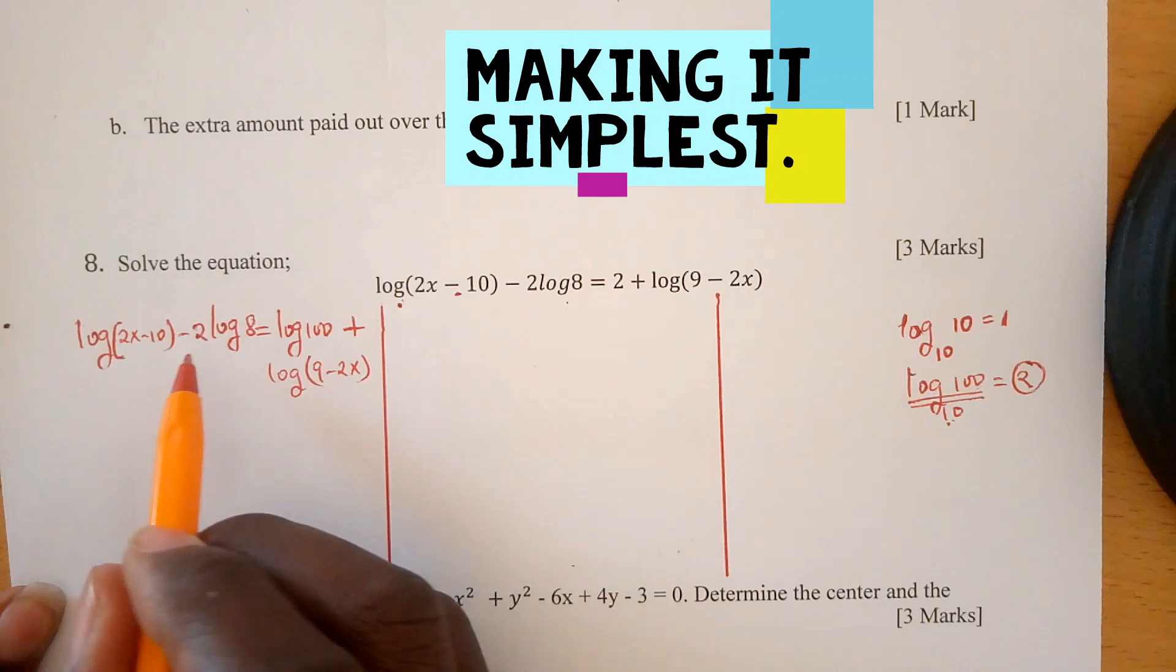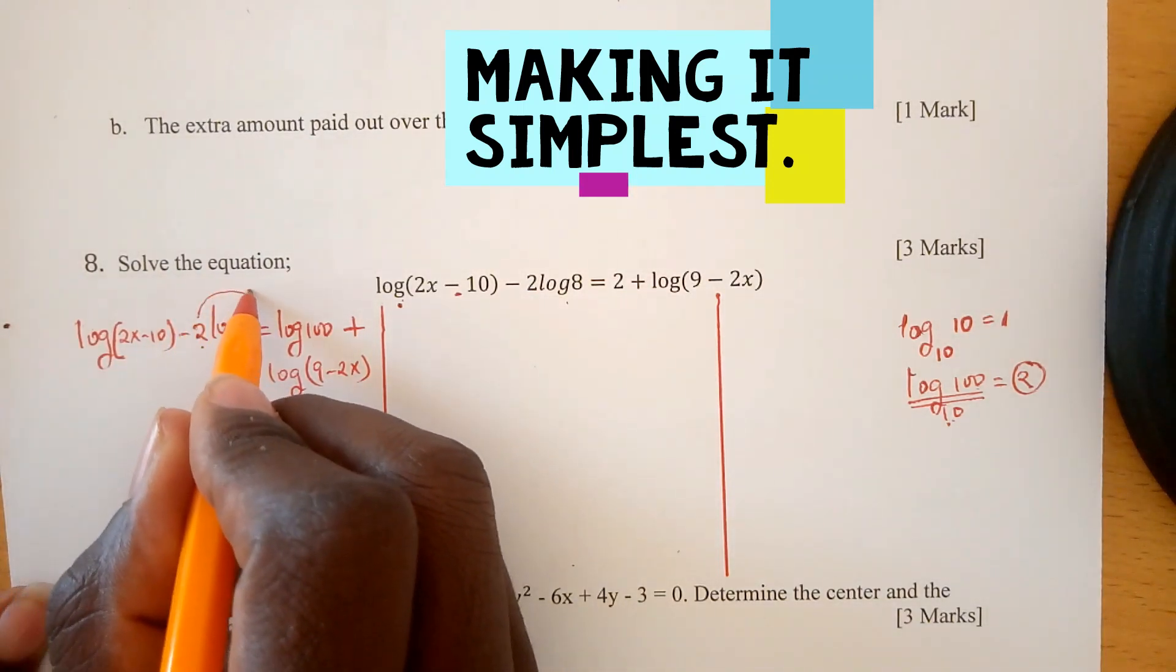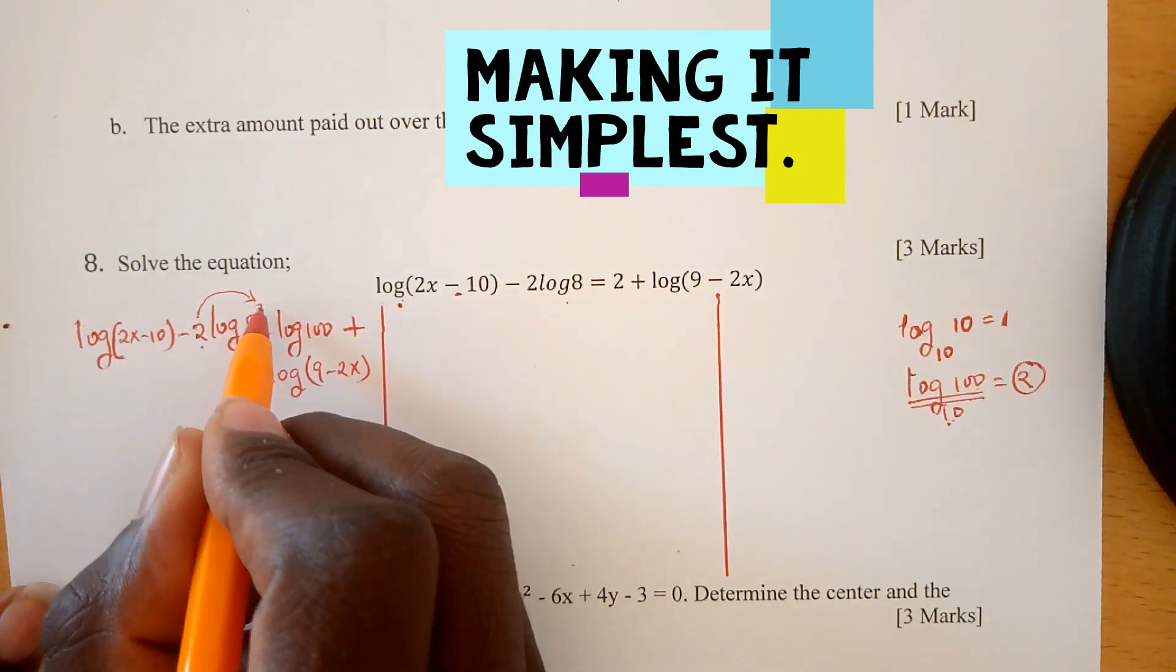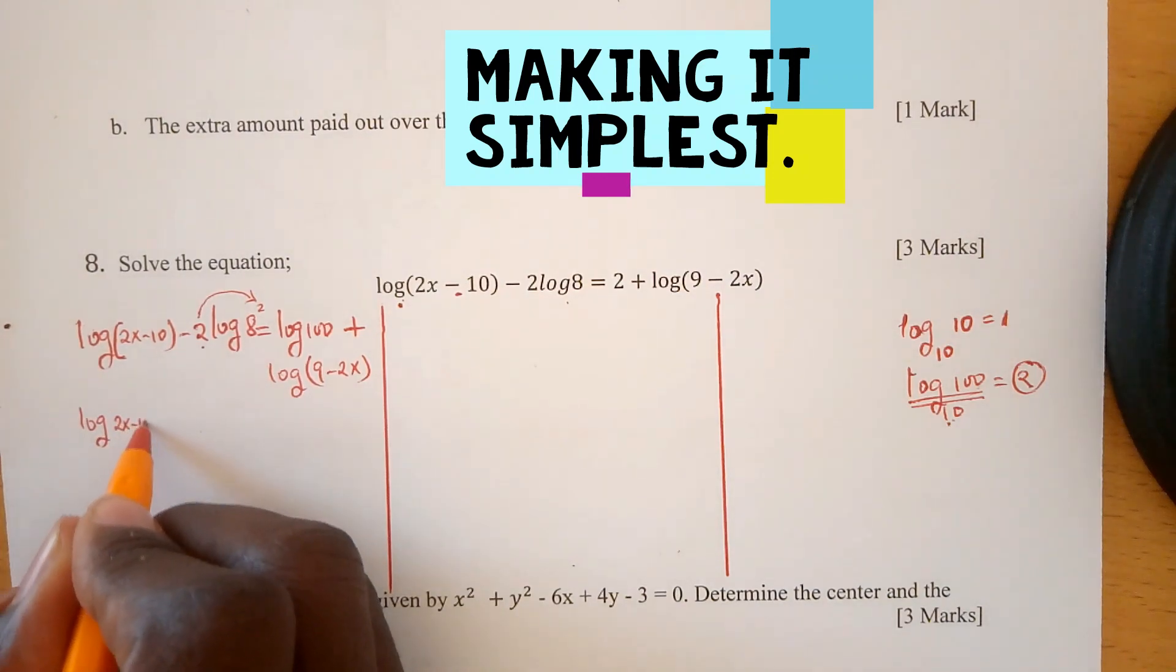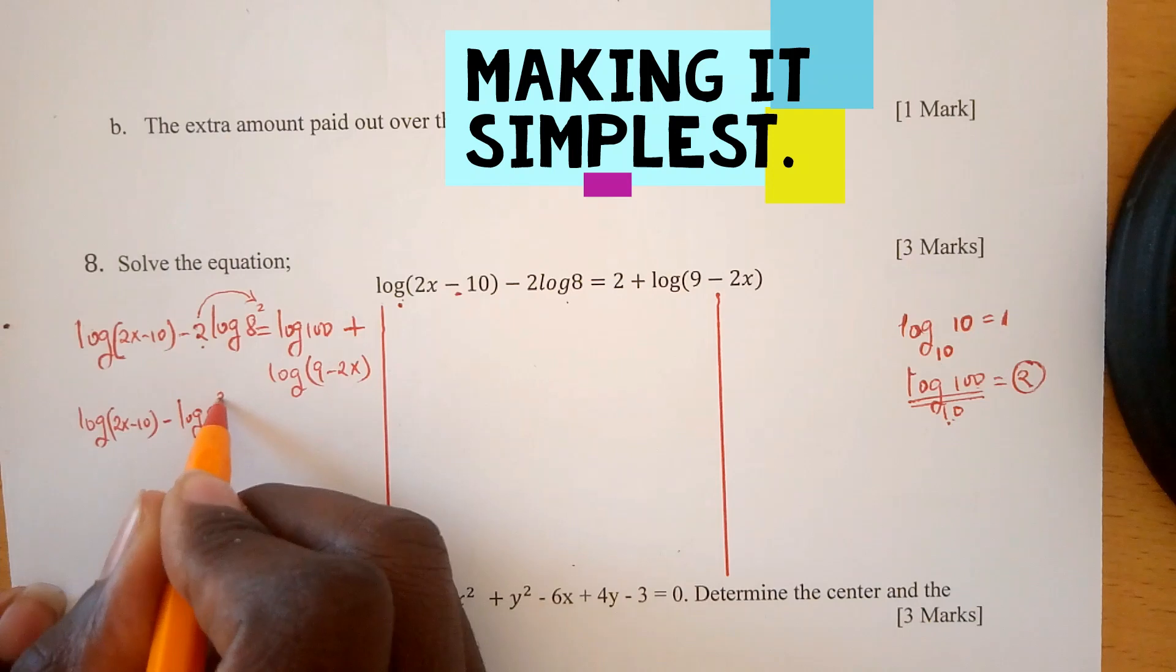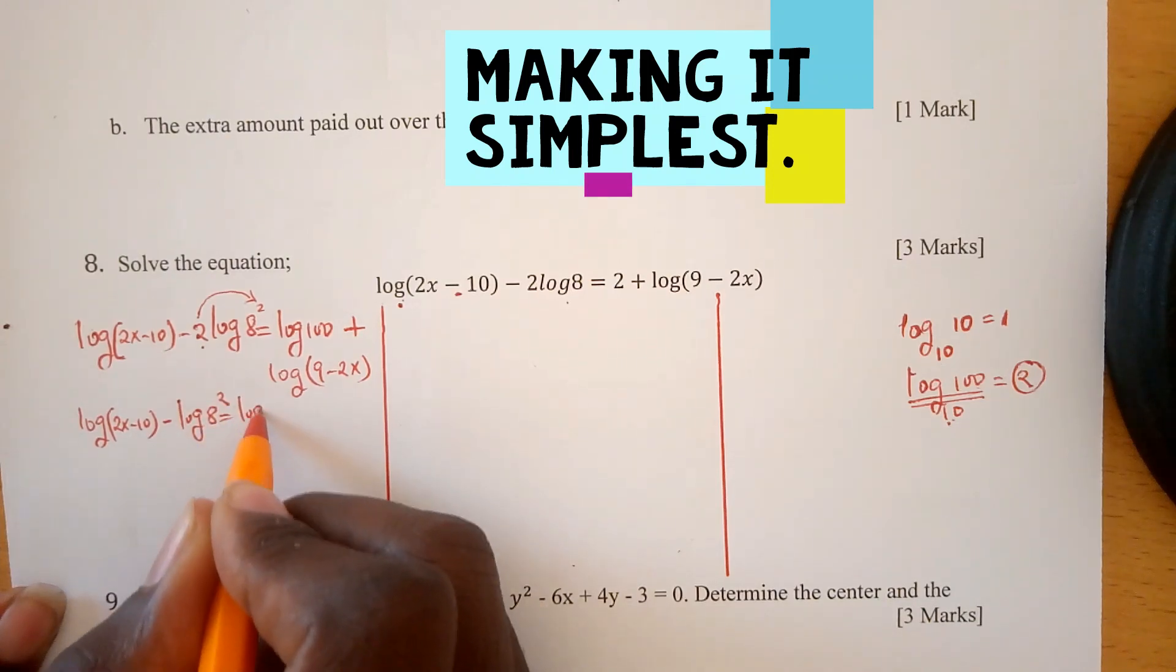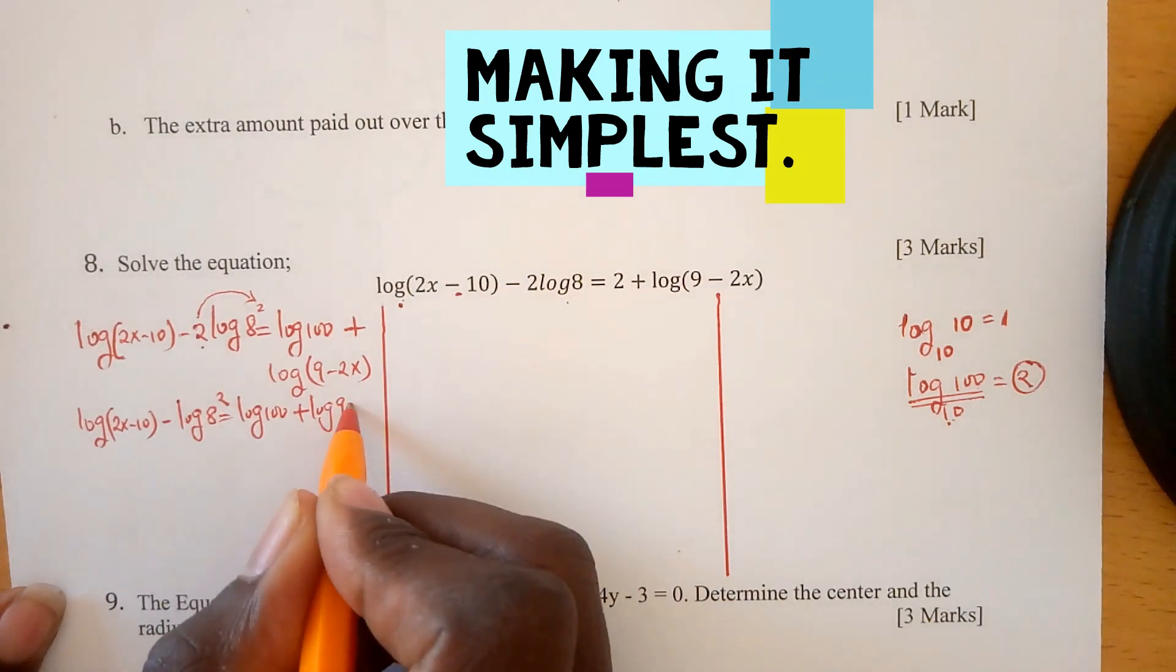We can move this 2 by putting it as a power above 8. Now we have log(2x - 10) - log(8²) = log(100) + log(9 - 2x).